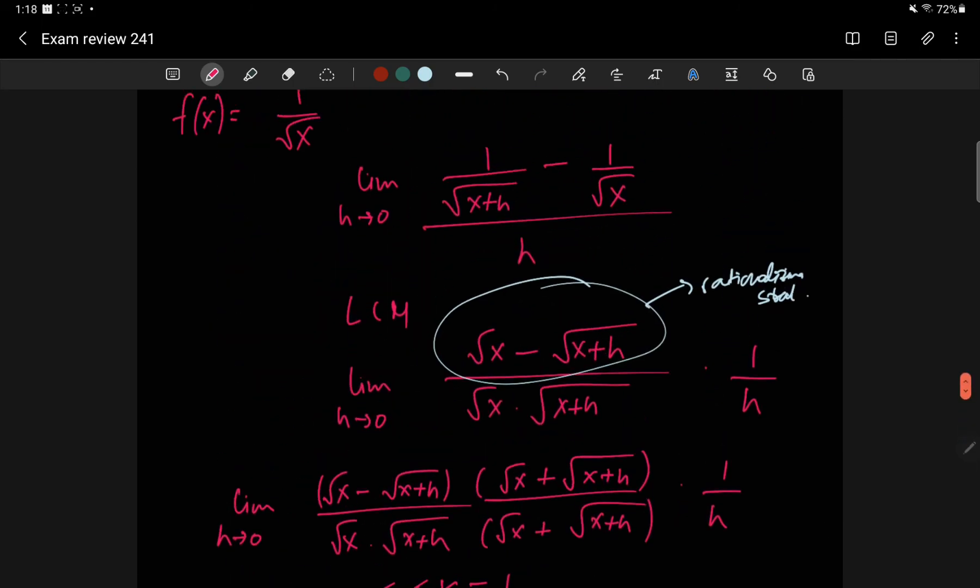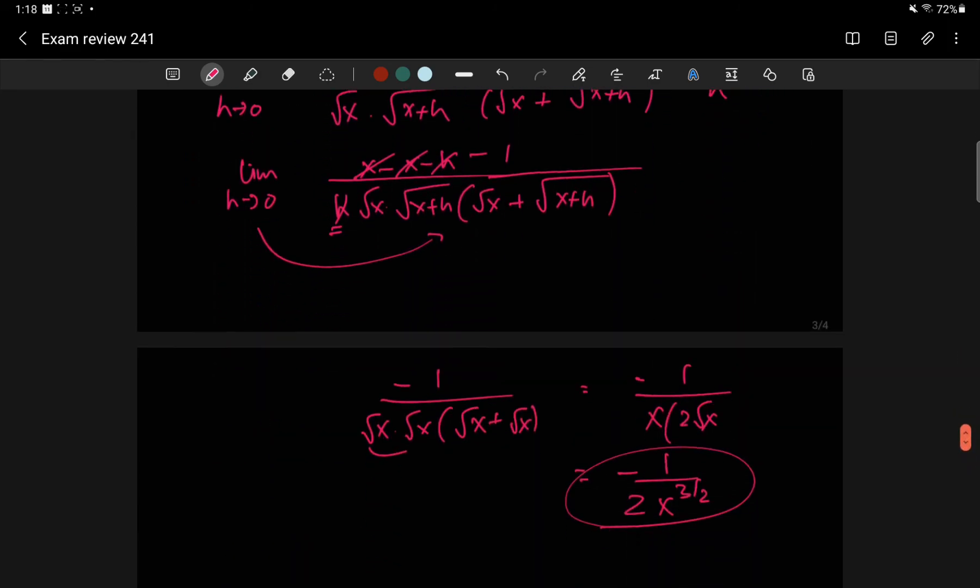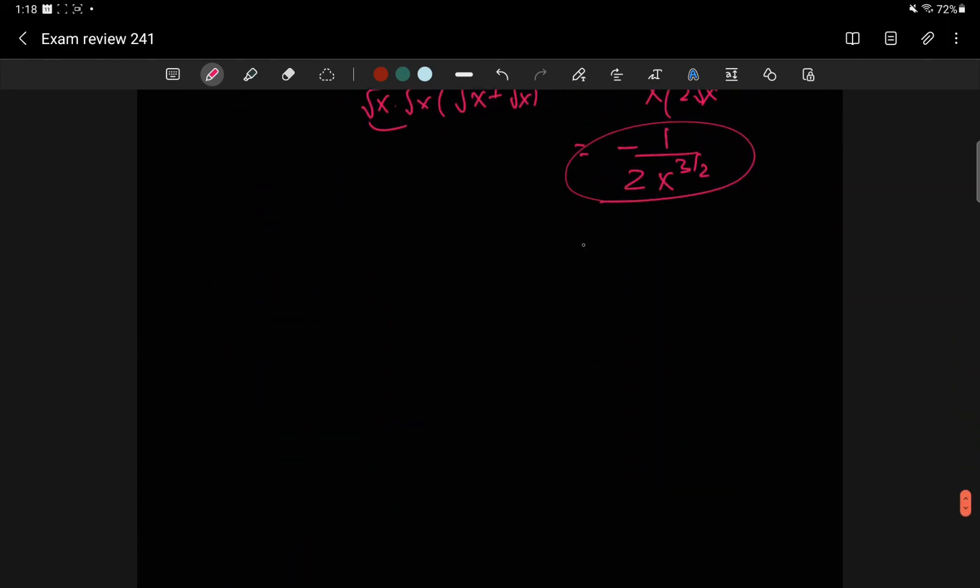You can verify that's what it should be. Because that's x to the negative half, so you have negative half x to the negative 3 halves. To write it in a more familiar way, you can verify directly that indeed that is a derivative.